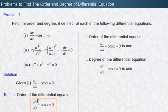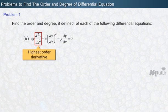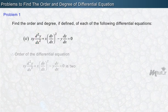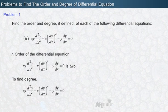For the second differential equation, the highest order derivative present is d²y/dx². Therefore its order is 2. The given polynomial equation has derivatives both d²y/dx² and dy/dx, where the highest power raised to the higher order derivative d²y/dx² is 1, so its degree is 1.